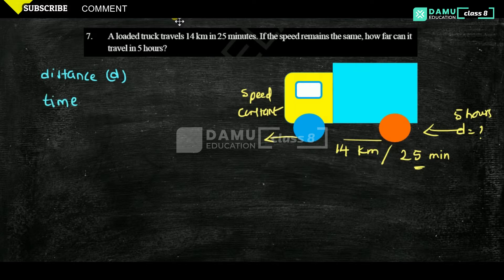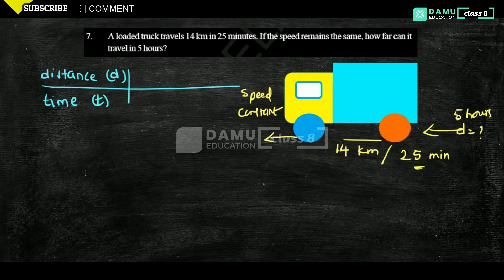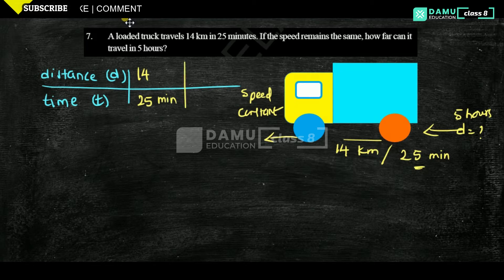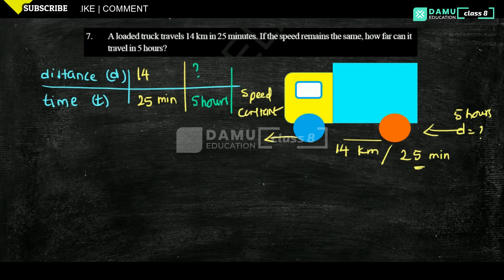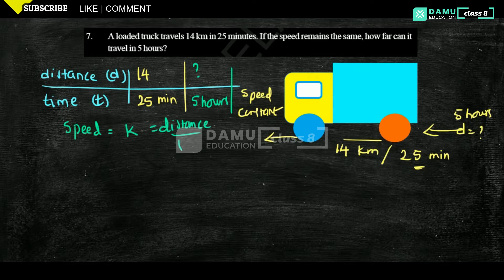The distance given for the first case is 14 kilometers for 25 minutes. The next question asks how much distance it will travel for five hours. Since speed is constant, speed equals distance divided by time.